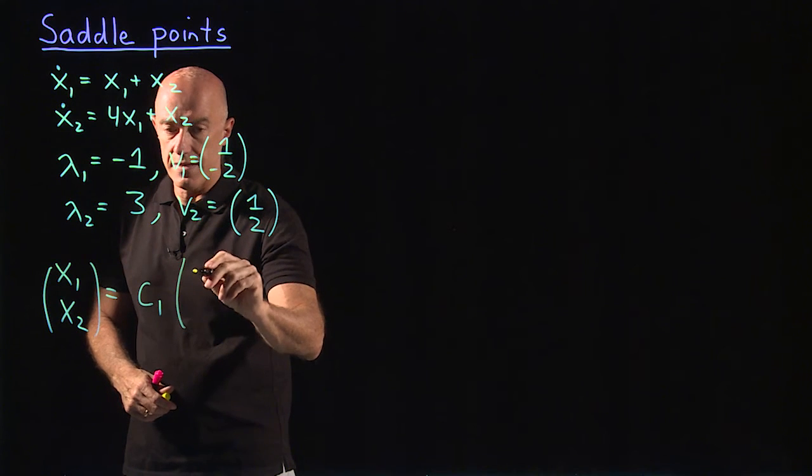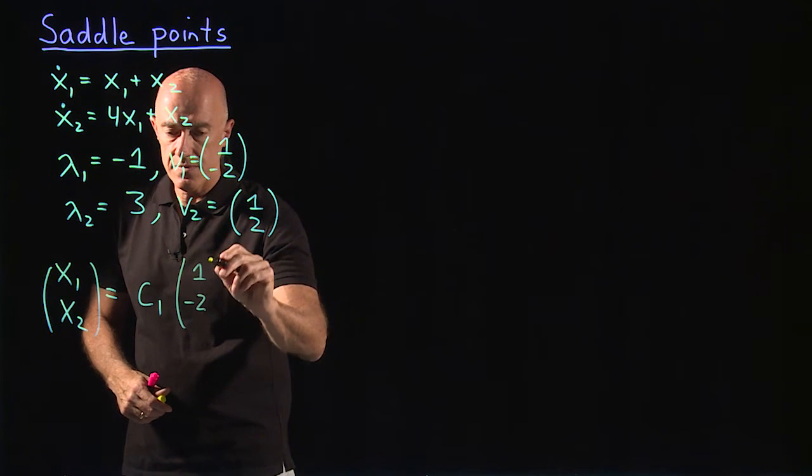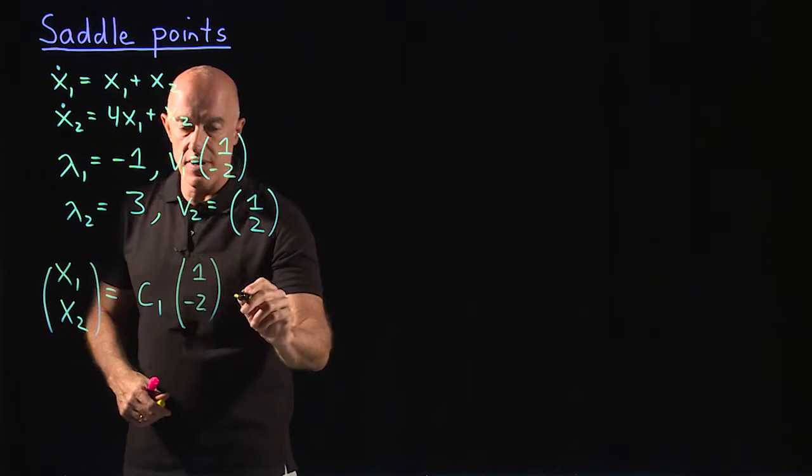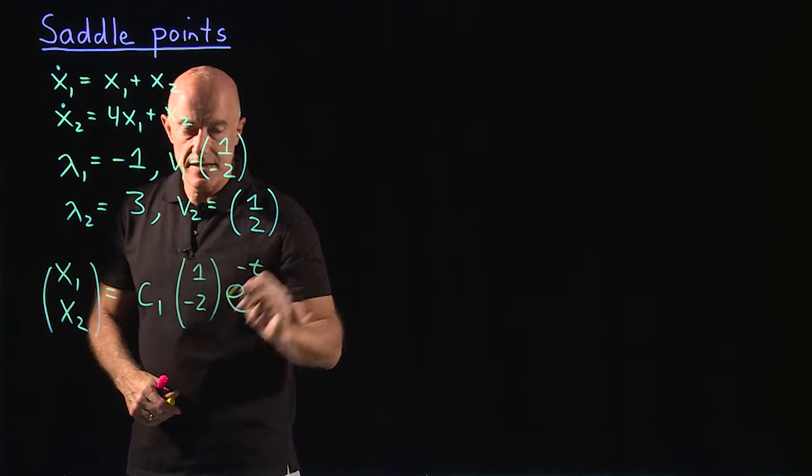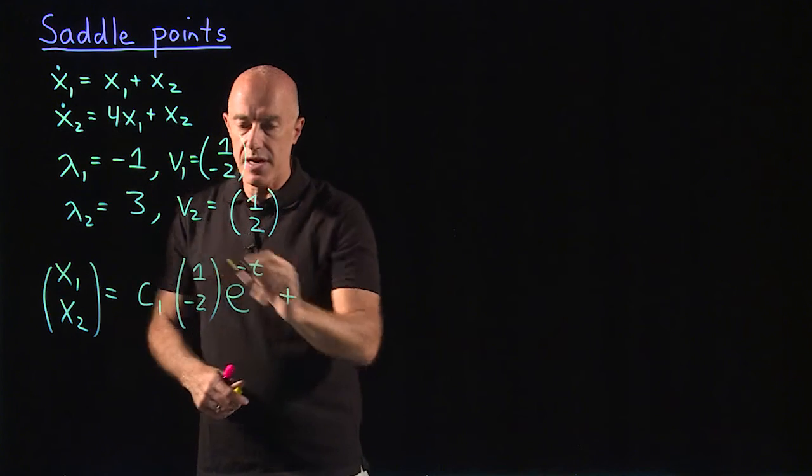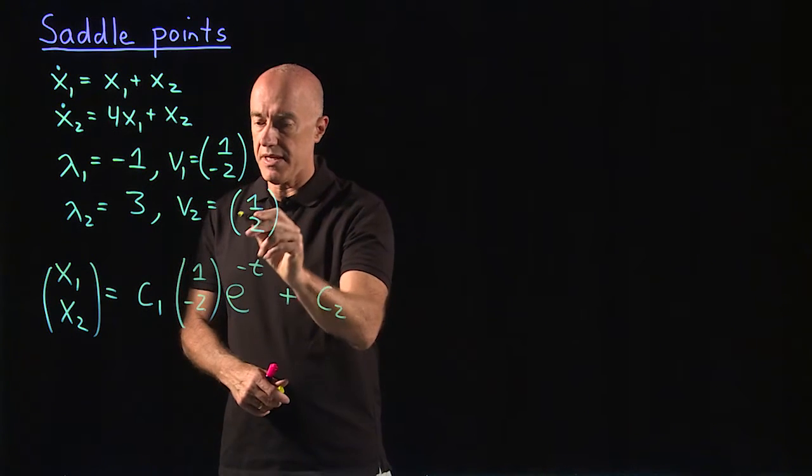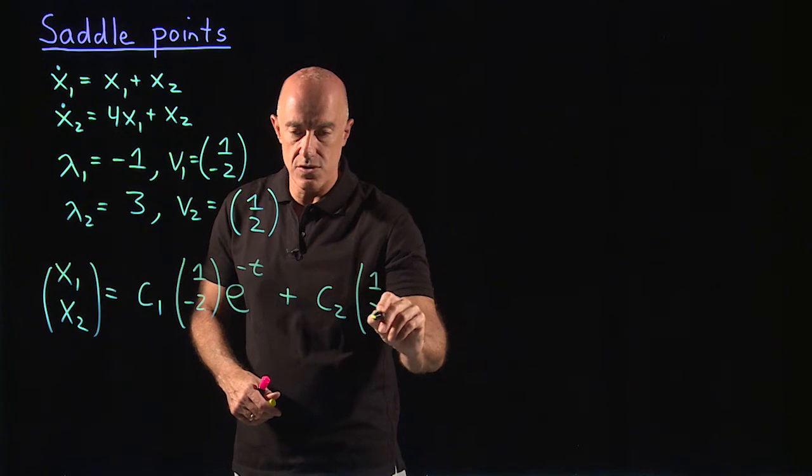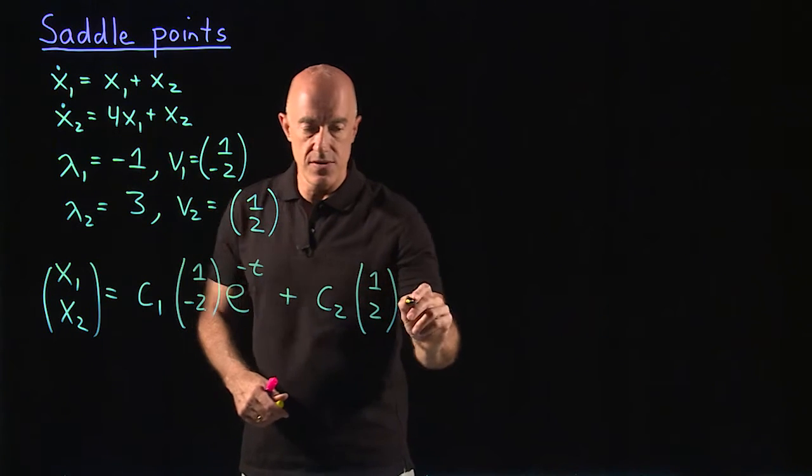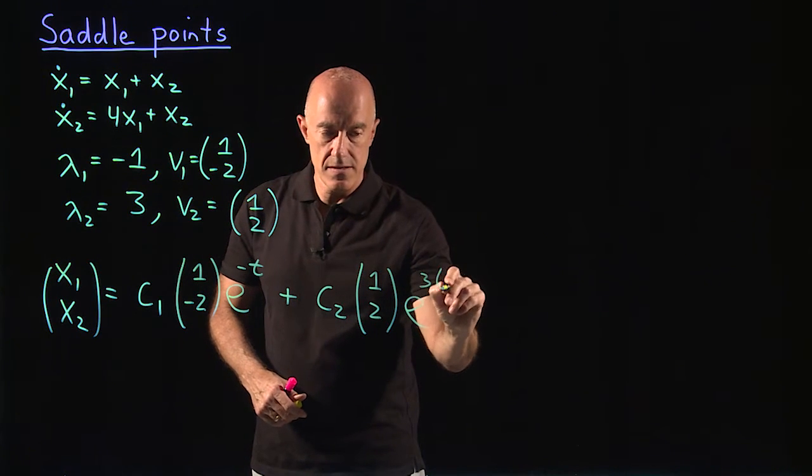...plus another constant times the second eigenvector, 1, 2, times e to the 3t.